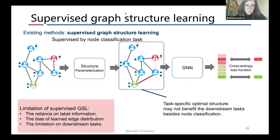The third problem is the limitation on downstream tasks. The supervised method usually learns a task-specific optimal structure for node classification tasks. However, the learned structure may not benefit the downstream tasks besides node classification.